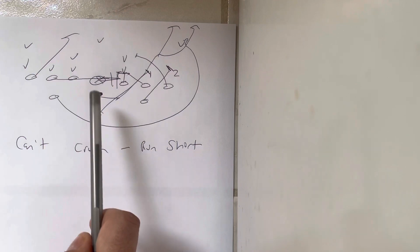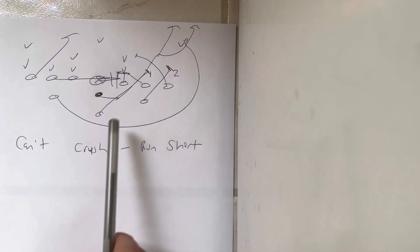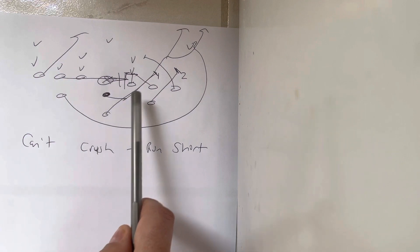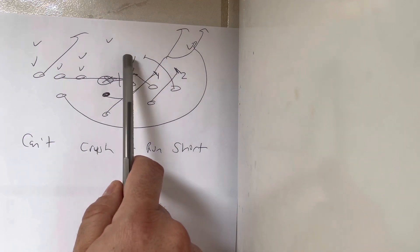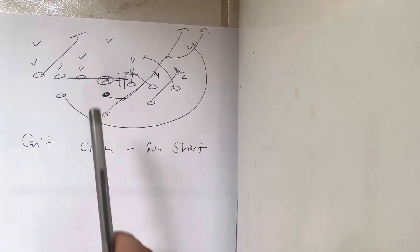The quarterback is going to take the snap, jump in the gap. He's going to let the B back clear. He's going to follow the inside hip of the B back. He's going to run in between these two blocks and run the daylight.